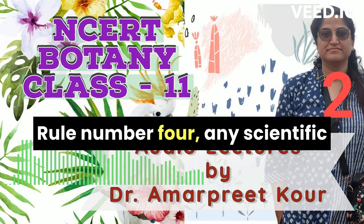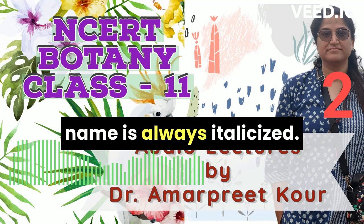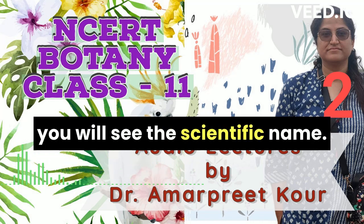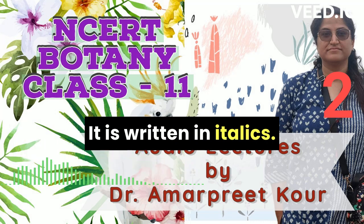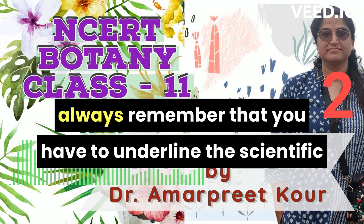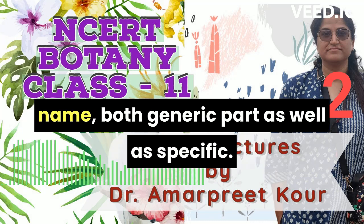Rule number four: any scientific name is always italicized. When you find it in a book, you will see the scientific name written in italics. But while writing the scientific name in your notebook, always remember that you have to underline the scientific name — both the generic part as well as the specific part.